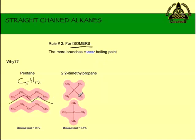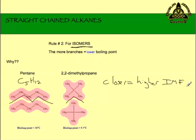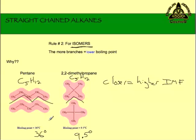2,2-dimethylpropane — the branches hinder the molecules from getting close together. Remember, closer equals higher intermolecular forces. Because of the branches, these molecules can't get very close together, so the intermolecular forces are weaker than pentane. Notice also: this is also C5H12 — same number of atoms, different arrangement — that's what an isomer is. Pentane has a boiling point of 36 degrees because of the strong intermolecular forces; with the branch, 2,2-dimethylpropane is only 9.5 degrees. The branched one is lower because of the branches.